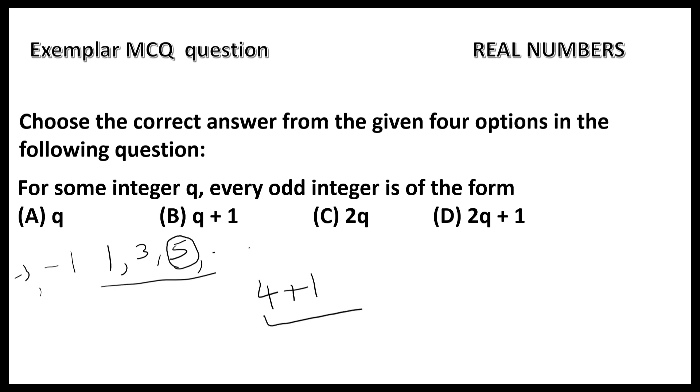How can we get even integers? If the integer is q, then if we multiply 2 to the integer, means 2q, we will get even integer and add 1, we will get odd integer. So, option D is correct.